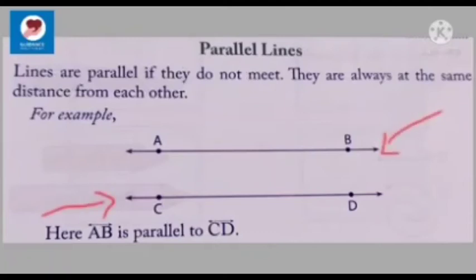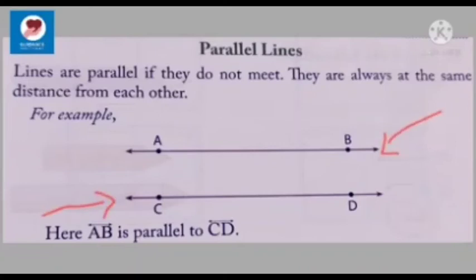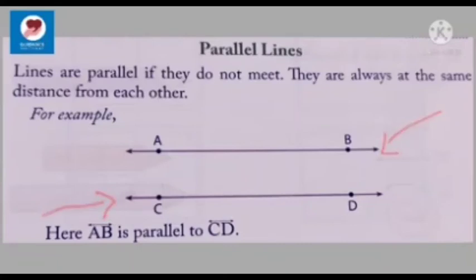This type of lines are called parallel lines. In this picture, line AB and line CD are parallel. These two lines do not meet and are always at the same distance from each other.